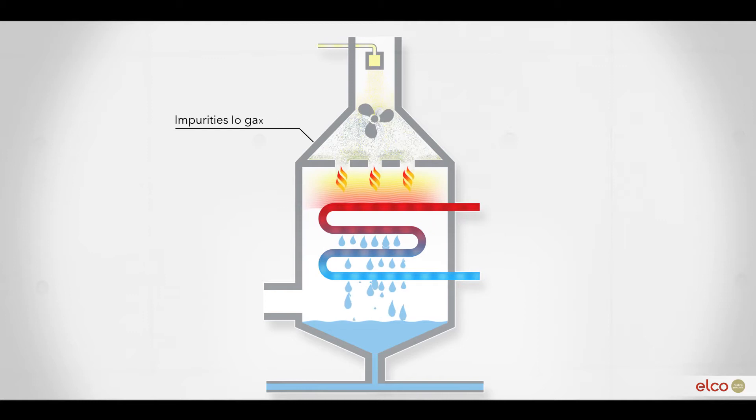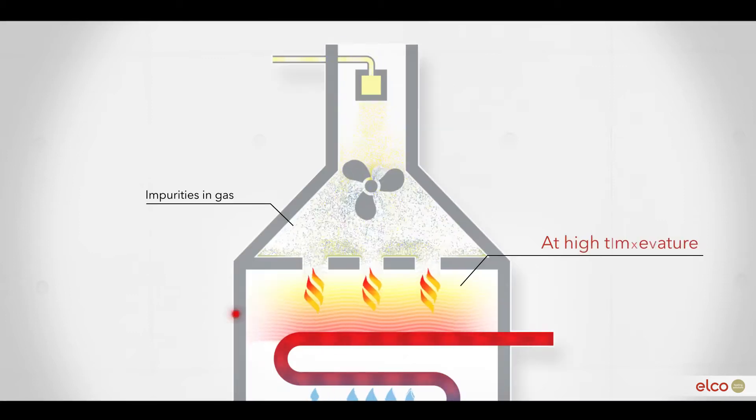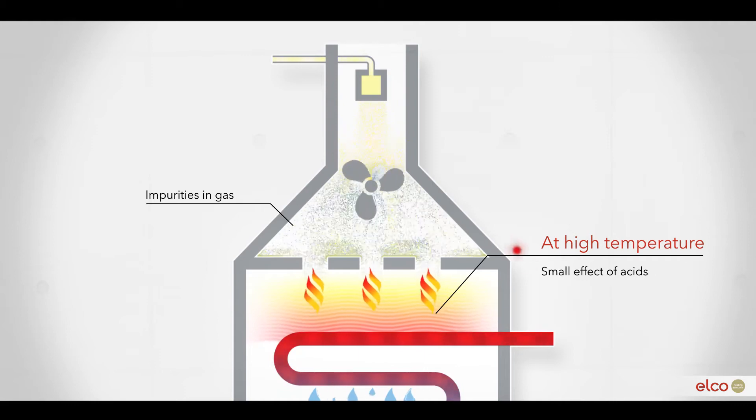During the combustion of gas and air, impurities in the gas form acids. In the high temperature part of the boiler, where we only have hot flue gases, the effect of these acids is very small.